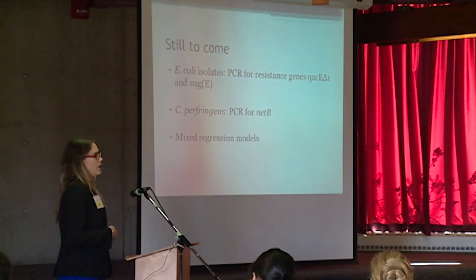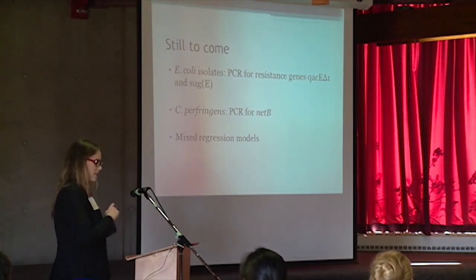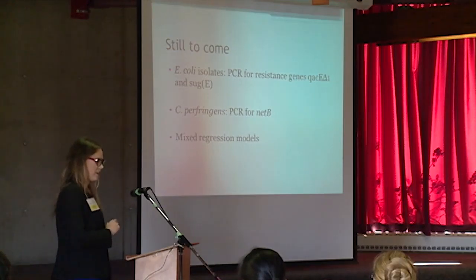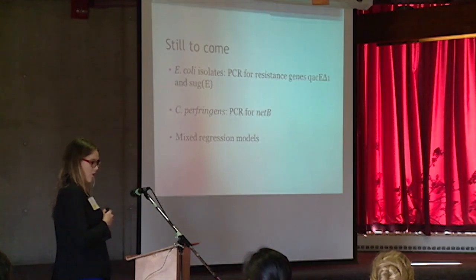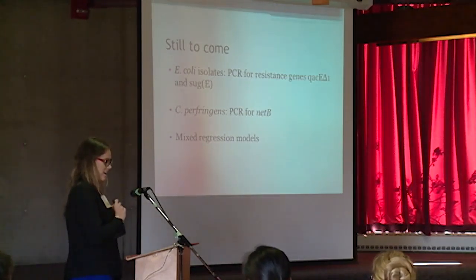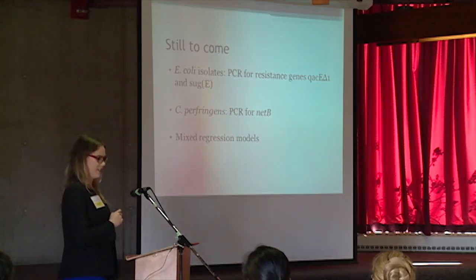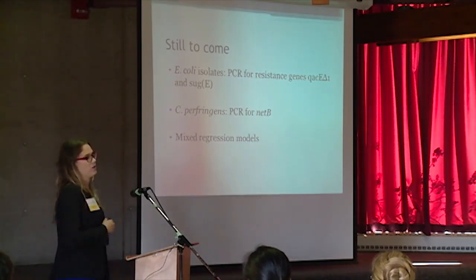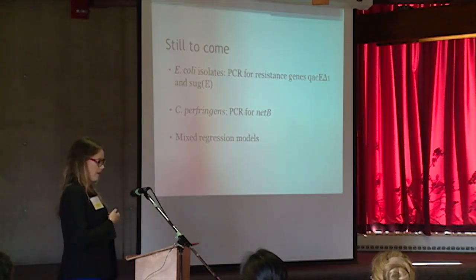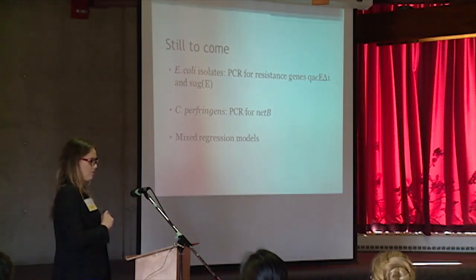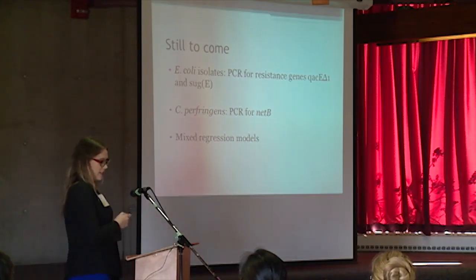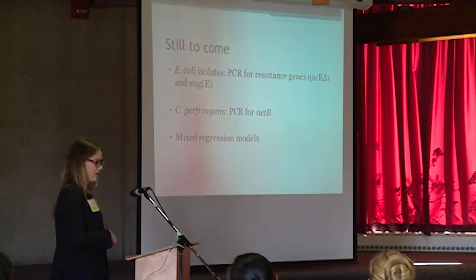Further testing on the E. coli and clostridium isolates will be conducted in the upcoming months. We are testing E. coli for QUAT-E delta-1 and SUG-E genes, which are associated with resistance to quaternary ammonium compounds. Clostridium perfringens will be tested for the net B gene, which is associated with necrotic enteritis. Once all the data is in, we will be doing mixed regression models to find associations between the presence and concentration of organisms, the sanitation procedure, flooring type, and other factors, as well as between disinfectant use and antimicrobial resistance.